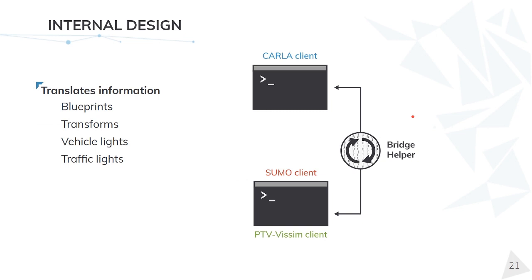Specifically, the Bridge Helper is currently translating data regarding blueprints — that is, from a CARLA blueprint to the proper vehicle type of the traffic simulator and vice versa — regarding transforms, that is location and rotation, and regarding vehicle lights and traffic lights.